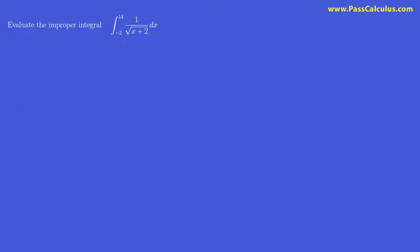How do we handle something like this? Let's start by recopying it. The trick here is to replace this as the limit as t goes to negative 2 from the right of the integral from t to 14 of 1 over the root of x plus 2.